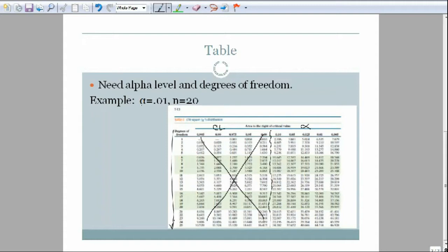Our example is alpha is .01 and our n is 20. So we need our degrees of freedom and that's 20 minus 1, which is 19.